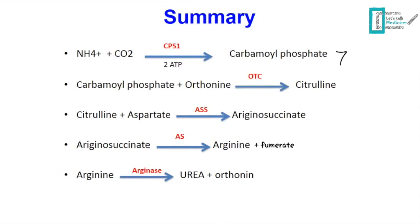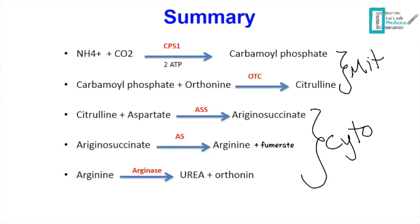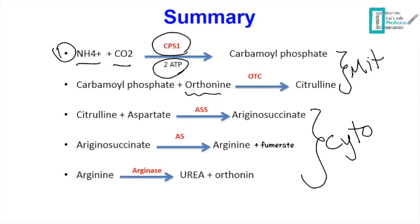In summary, the urea cycle is five steps that happen in the liver — two in the mitochondria and three in the cytosol. The first step is when excess ammonium reaches the liver and combines with carbon dioxide, with the help of enzyme CPS1, which requires two ATP. This is the rate-limiting step of the urea cycle and gives us carbamoyl phosphate. Carbamoyl phosphate then combines with ornithine, transported into the mitochondria via the ornithine transporter.